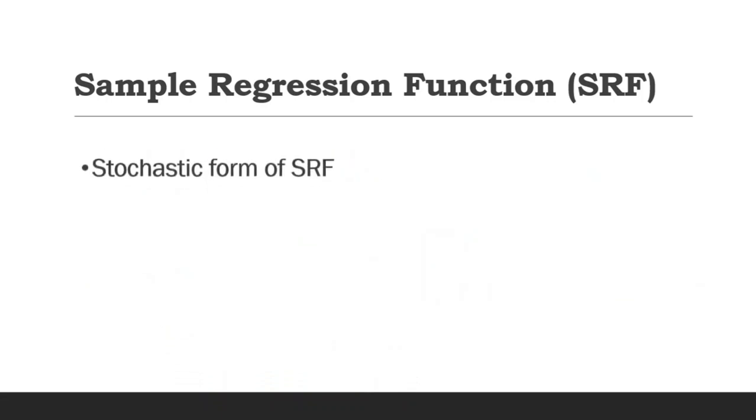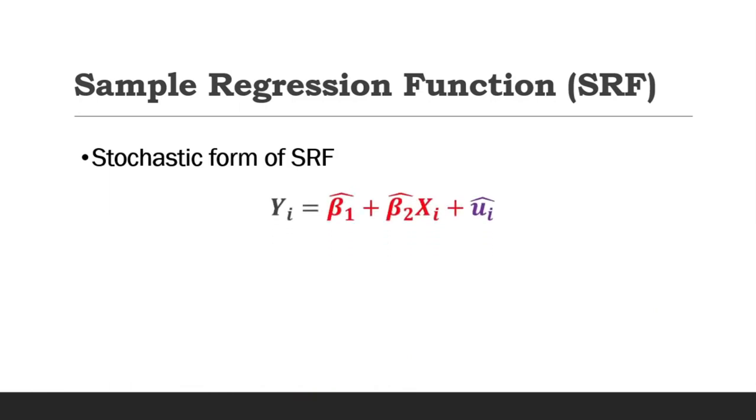The stochastic form of the sample regression function can be specified as y equals beta 1 cap plus beta 2 cap xi plus ui. Where the parameter estimates actually represent the estimated y as shown previously, we adopt another term for the non-systematic component or error term, so we call it the residual term in this case.